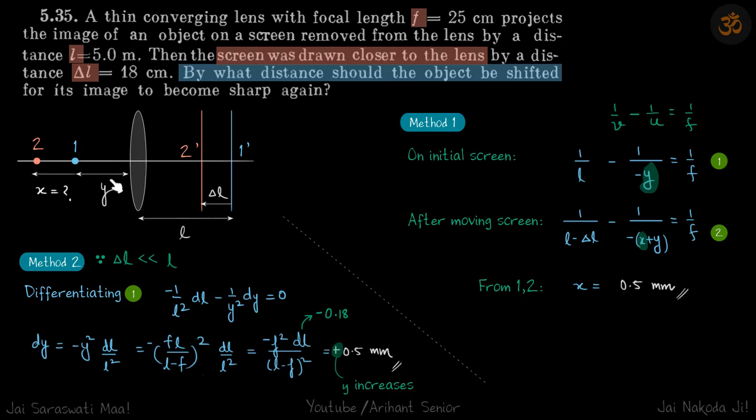Object and image always move in the same direction if the images are real in case of convex lens. Now you can think that if the object and images are virtual then what will happen, but in this case let's deal with the real images. So if the screen is moved towards the lens, that means the object must also be moved away from the lens, so in the same direction as the screen is moved. Let's say the distance is x, so we need to find what is the value of x.